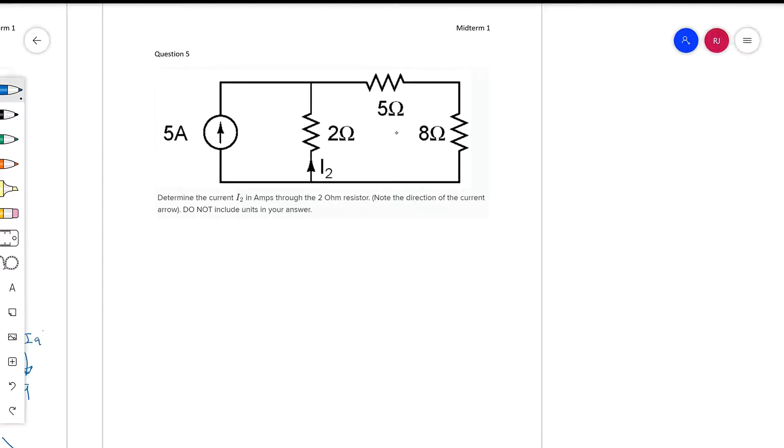So we notice that they care about this current here. For now I'm going to ignore that. I'm going to first think of the fact that there's a node here. There's a 5-amp current source going into that node. And I'll say that there's some amount of current that goes through this branch, through the 5-ohms and the 8-ohms. And then there will be some amount of current that goes through this 2-ohm resistor.